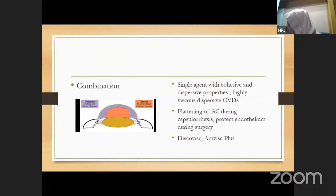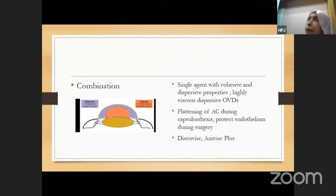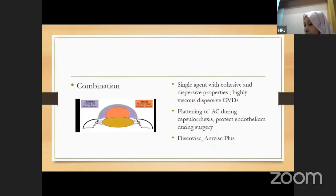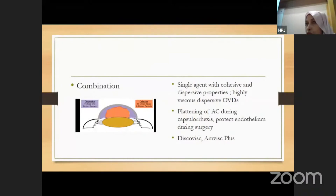We now have combination OVDs that combine cohesive and dispersive properties in a single syringe. There are products such as iCaps or Envis — single agents with both cohesive and dispersive properties. Typically they contain about 1 mL of cohesive and 1 mL of dispersive, where the front cohesive portion is used for capsulorhexis and the dispersive portion is used during IOL insertion.